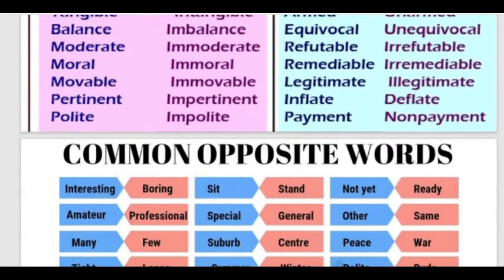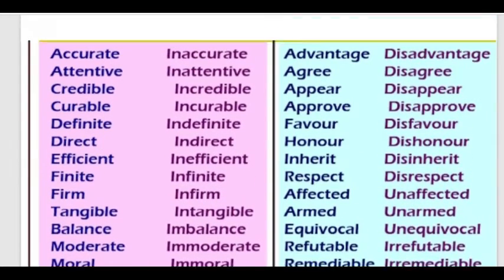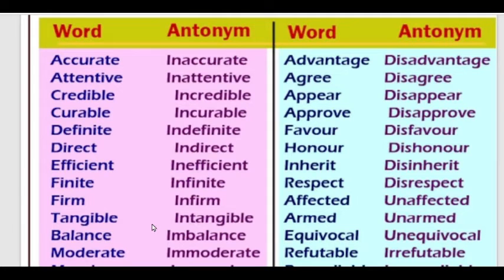Some other examples using prefixes: Accurate – Inaccurate. Attentive – Inattentive. Credible – Incredible. Recoverable – Irrecoverable. Definite – Indefinite. Direct – Indirect. Efficient – Inefficient. Finite – Infinite. Firm – Inform. Tangible – Intangible.